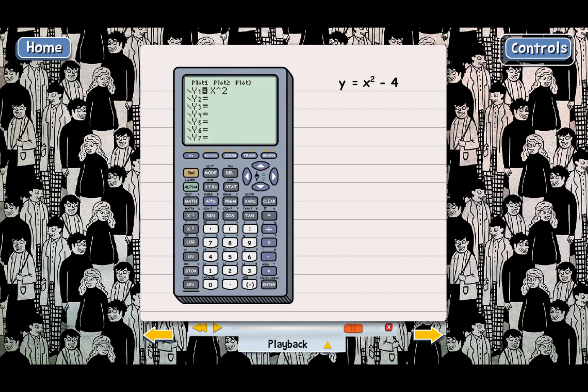And then from here, we just enter minus 4. Go ahead and do that. That's it. Now that we've got the equation entered, we're ready to graph. And so we press the graph key. Click on that one for me. You got it.